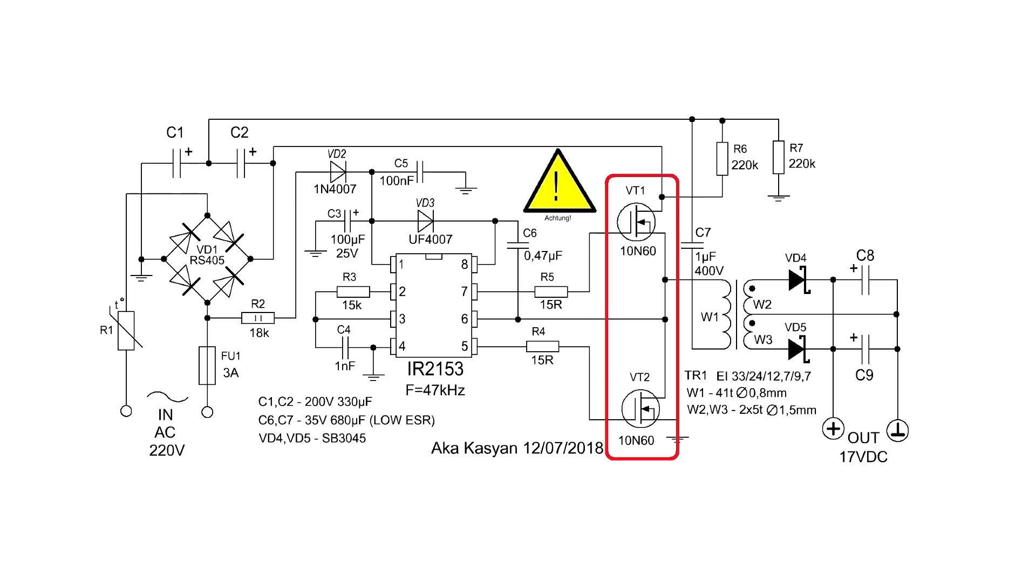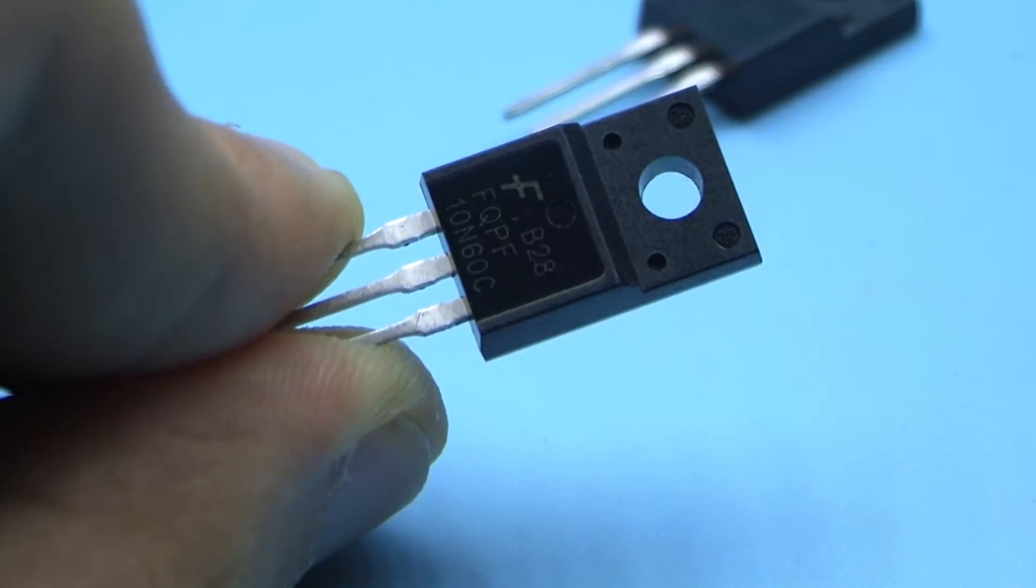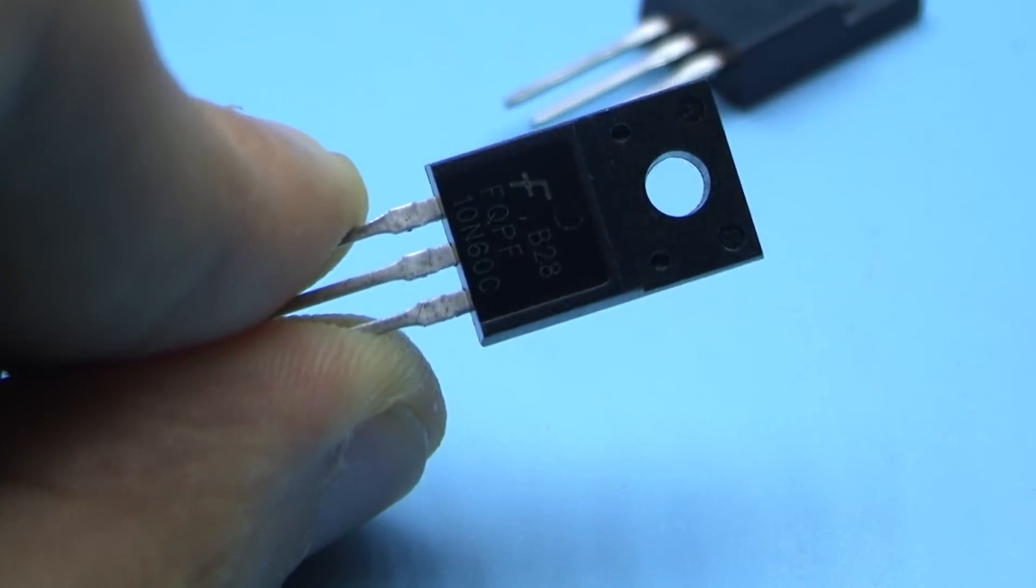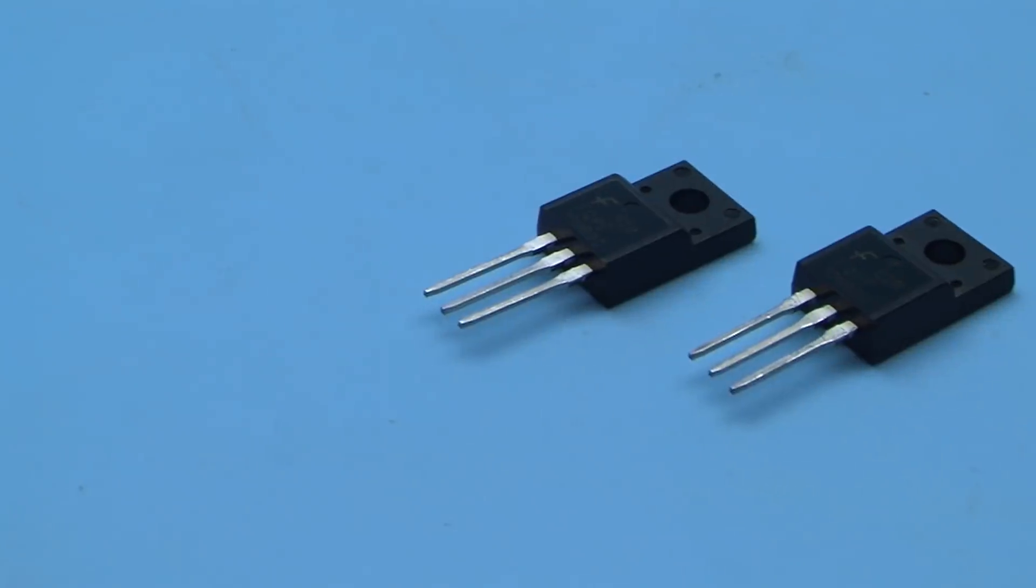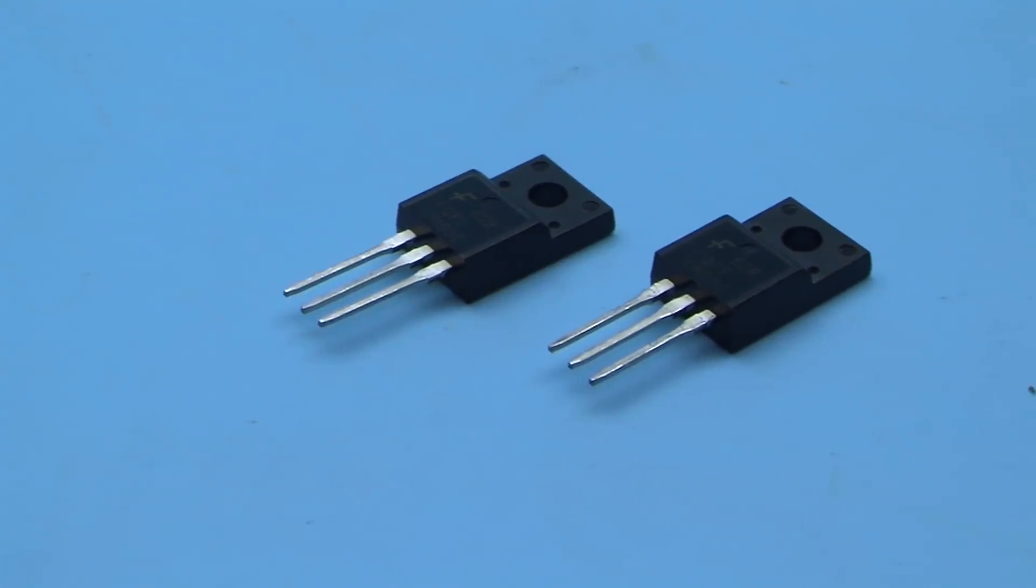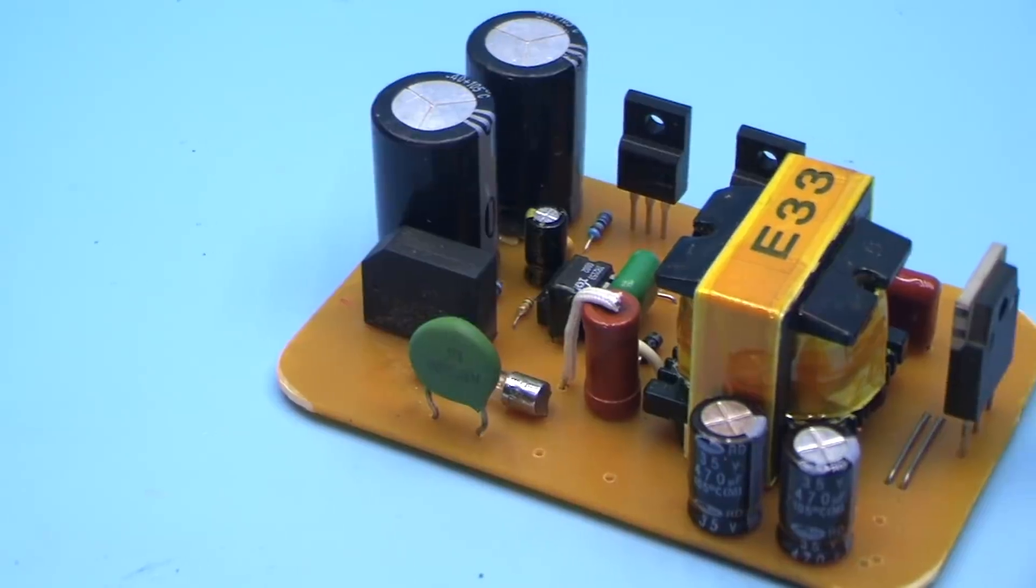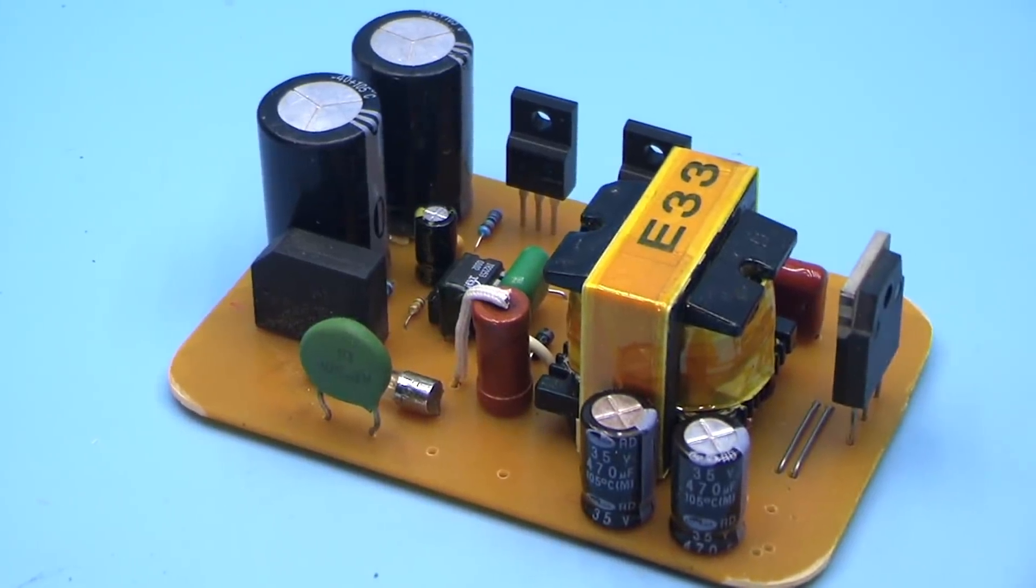Field effect transistors are any N channel with a current above 7 A for a voltage of 500 to 600 V. Try to choose transistors with the small capacity of the gate and the resistance of the open channel. They are easier to control and will be heated less.